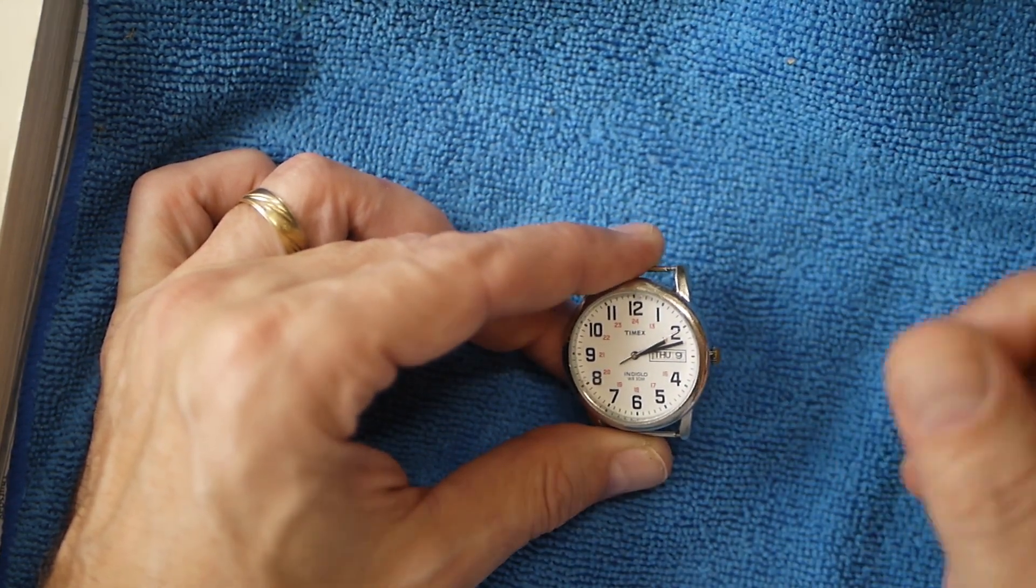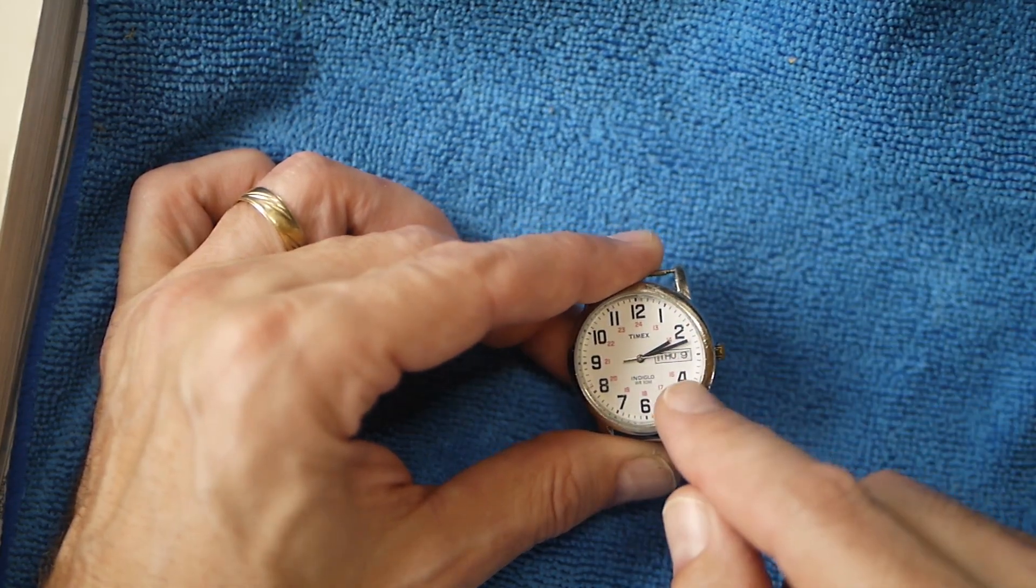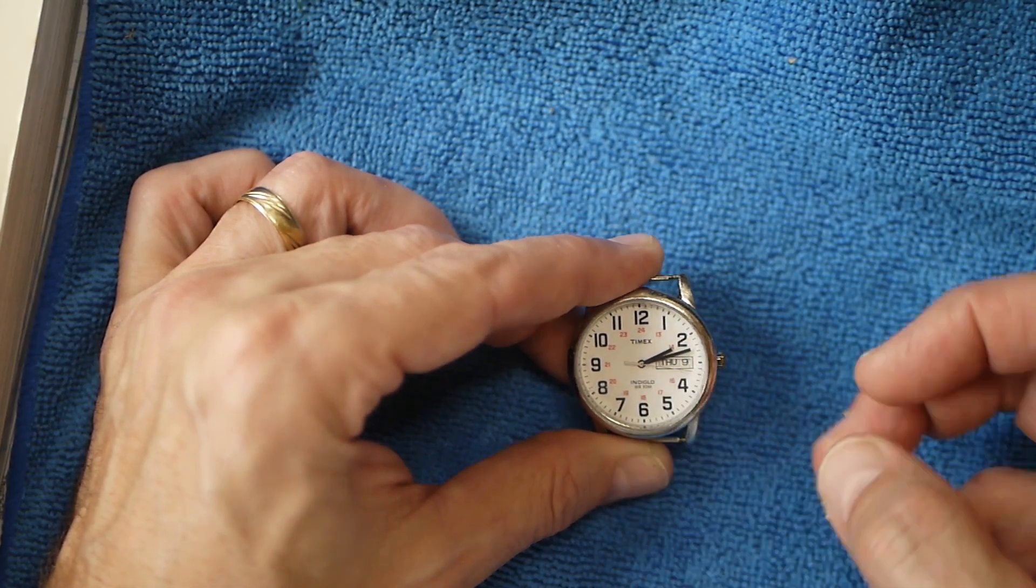Now that usually has different crown positions is what I call it. So all the way in is your running mode where you see your second hand, this silver one right here, ticking around.